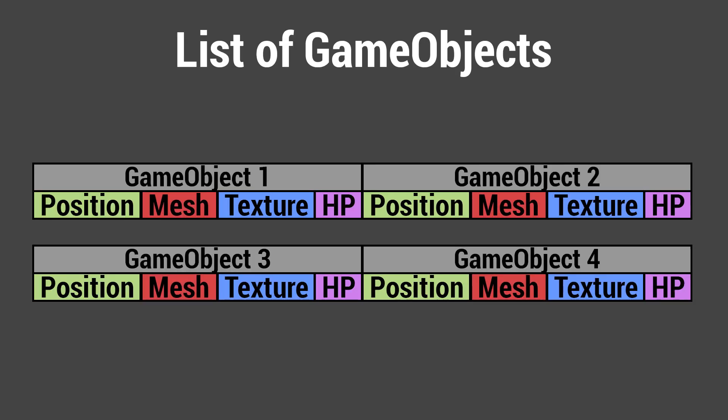In an Array of Structs model, if we just want to look at the translation component of a particular game object, we'd have to look here, skip over a block of memory, look here, skip over again, and so on. The farther we have to look for the next piece of data we need, the more likely we are to get a cache miss and have to go to different places in memory to locate that data.